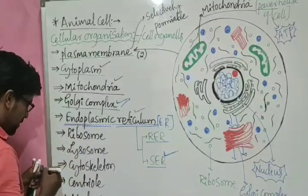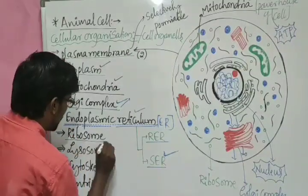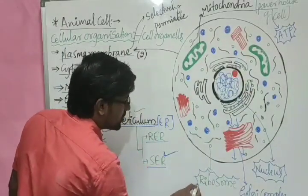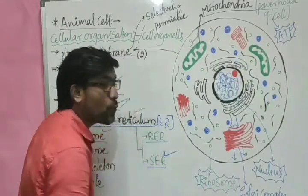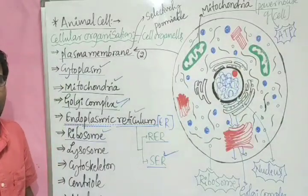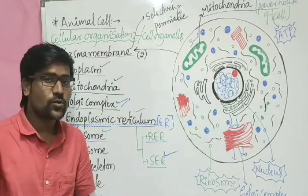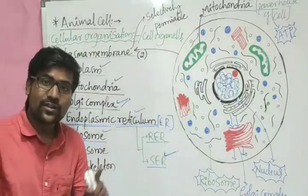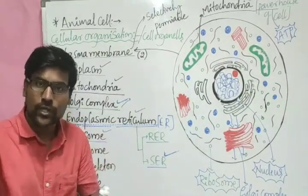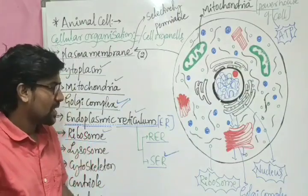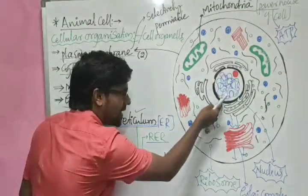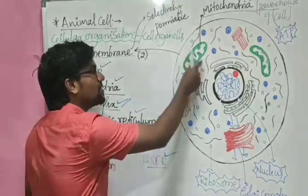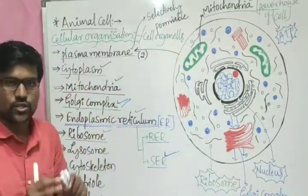The next major cell organelle is the ribosome. We refer to ribosomes as protein factories — they produce protein molecules. Those ribosomes are either attached to the endoplasmic reticulum, as we discussed, or they may be free in the cytoplasm. They may be free or attached.